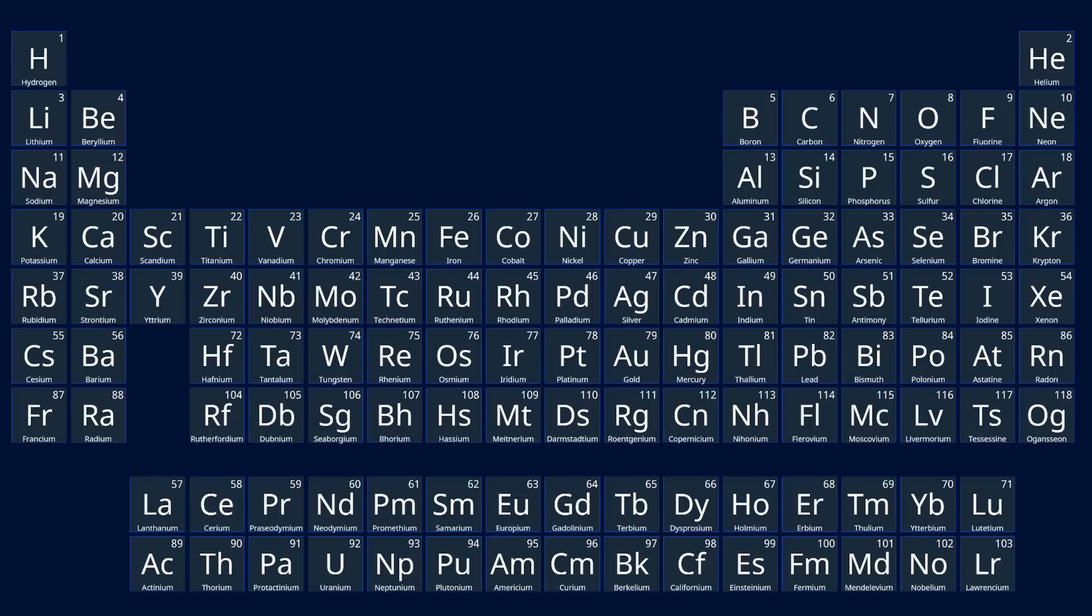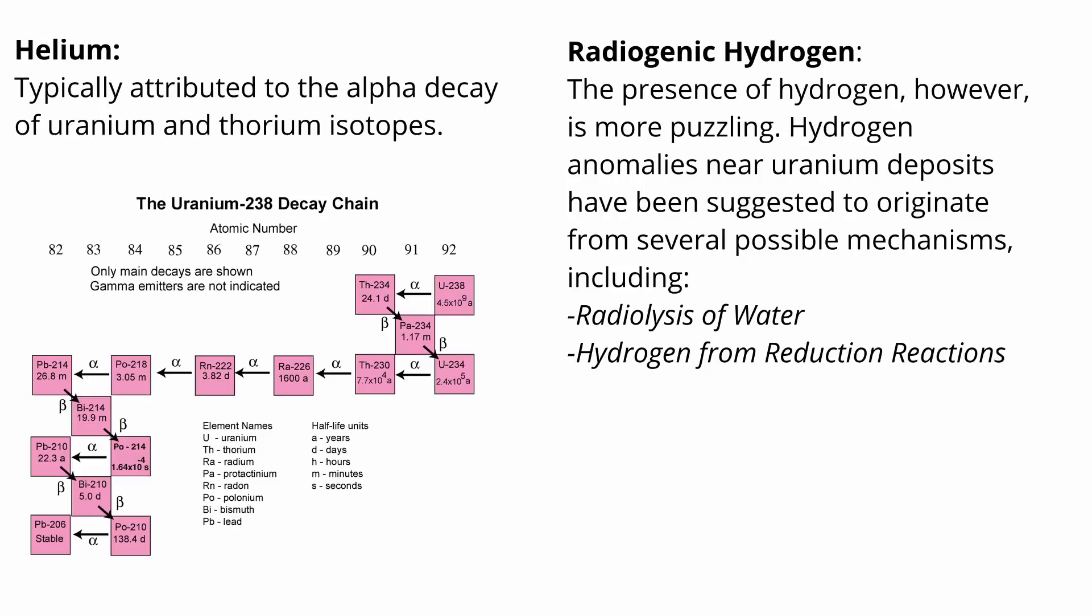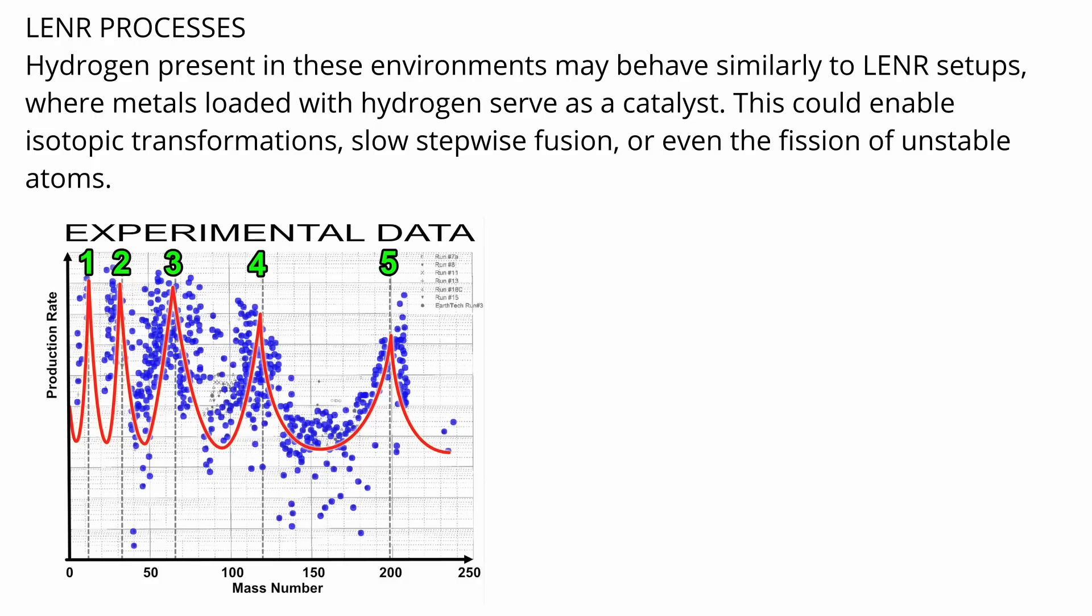This raises questions about the origins of certain rare isotopes and elements found in Earth's crust and the processes responsible for maintaining their abundances. For instance, anomalous helium and hydrogen concentrations near uranium deposits have traditionally been attributed to radiogenic processes, but they might hint at alternative mechanisms.